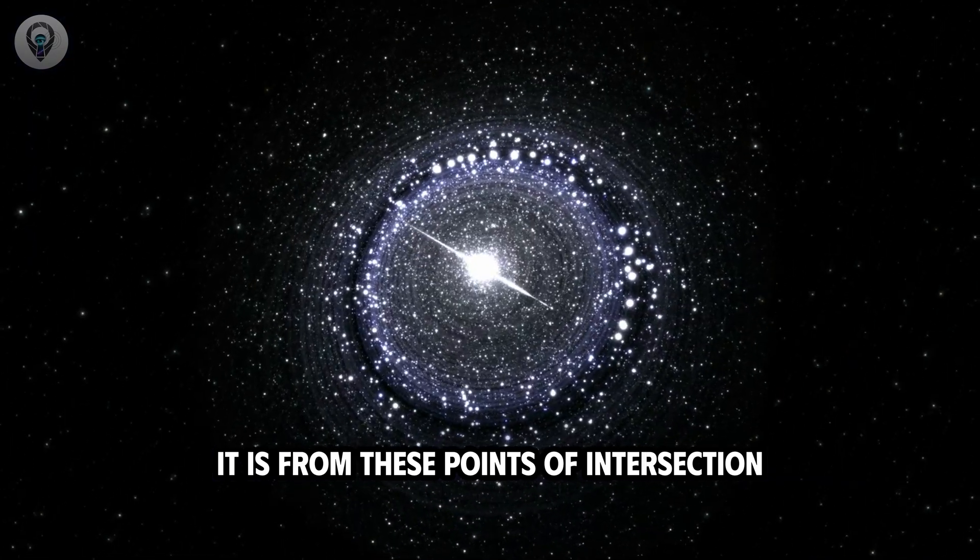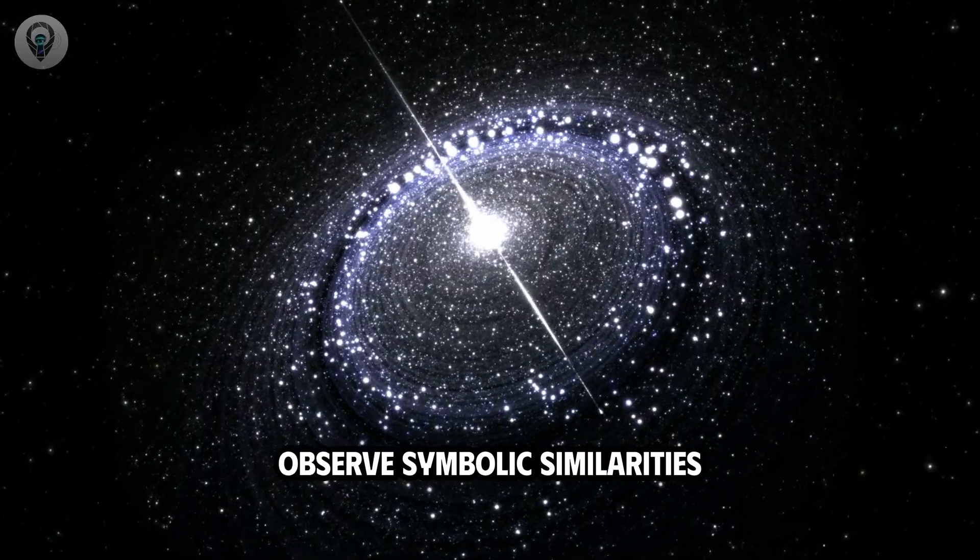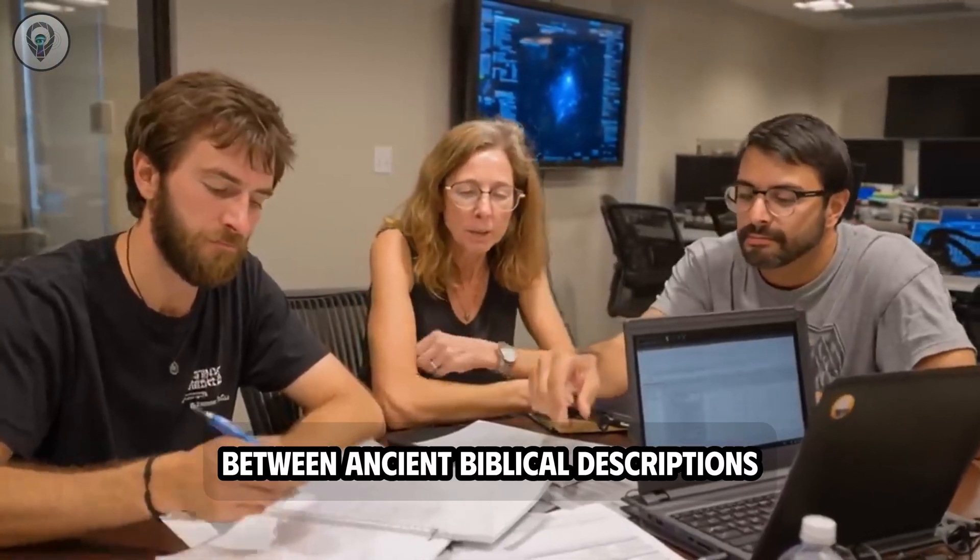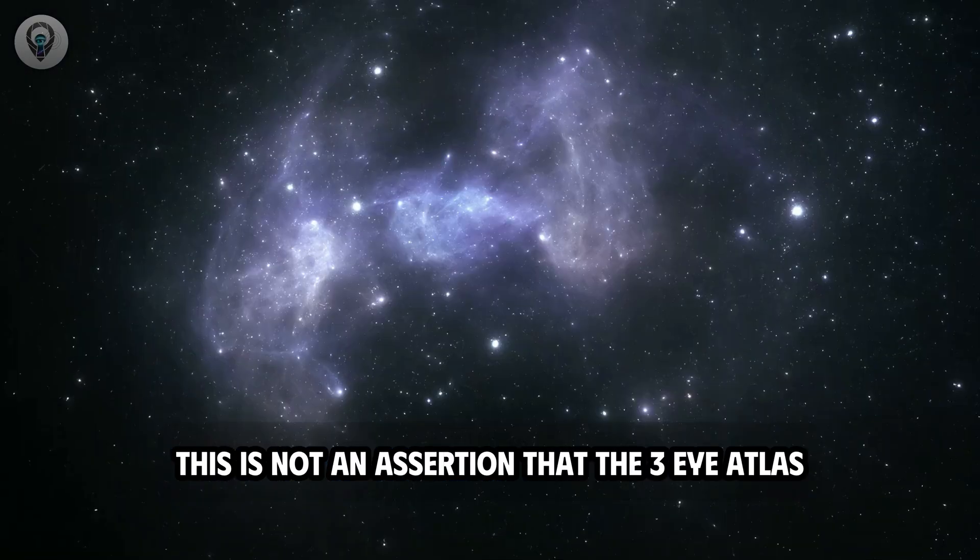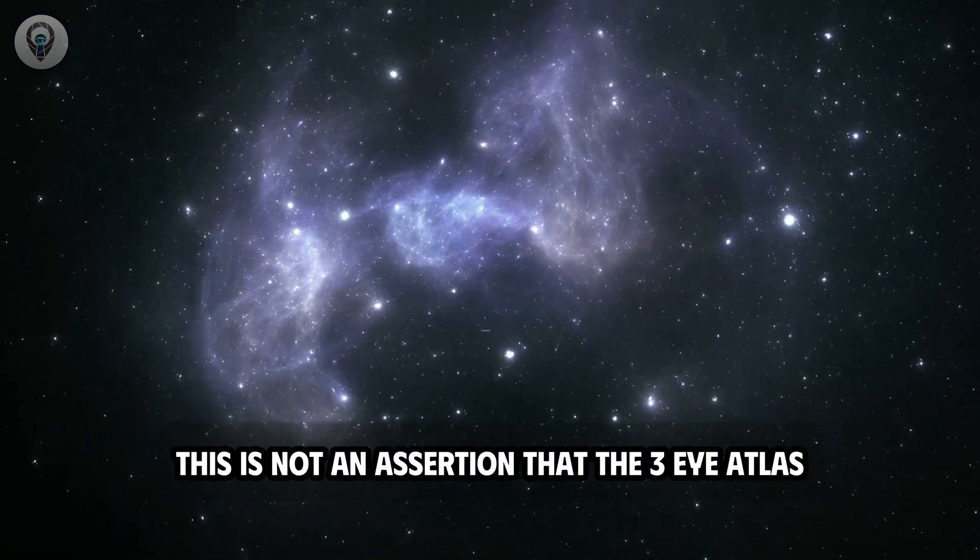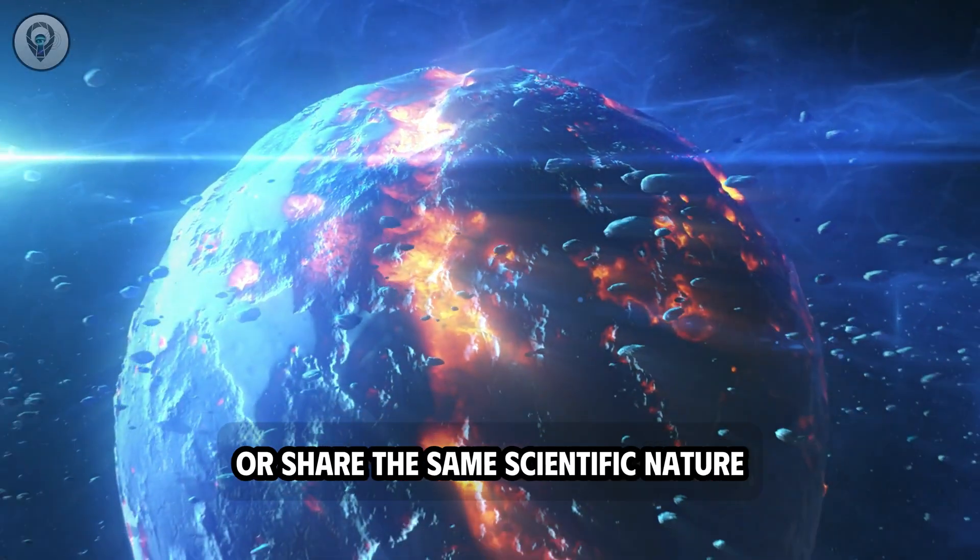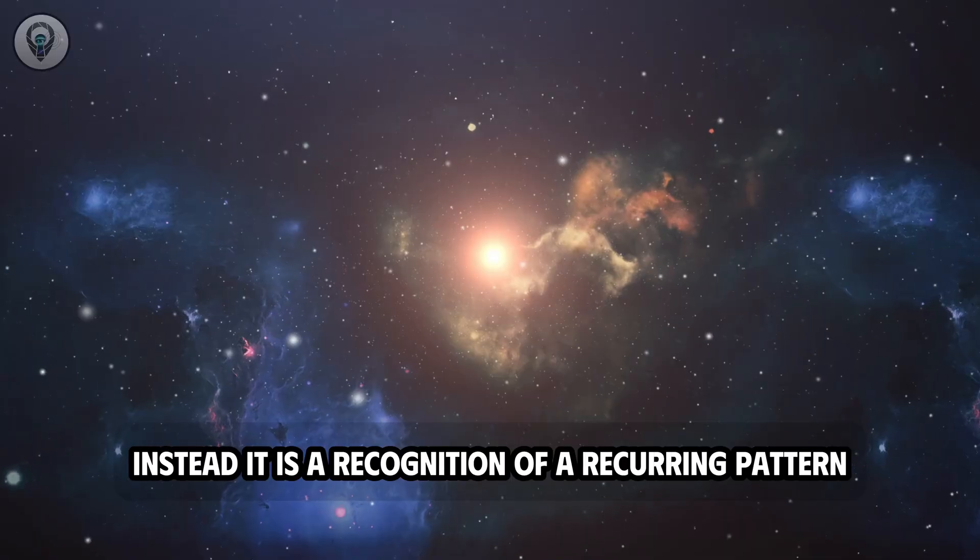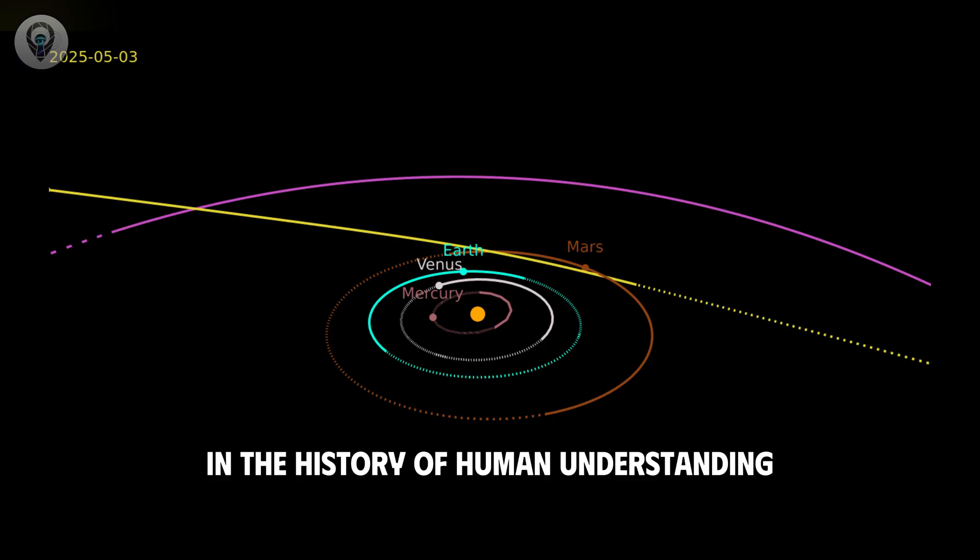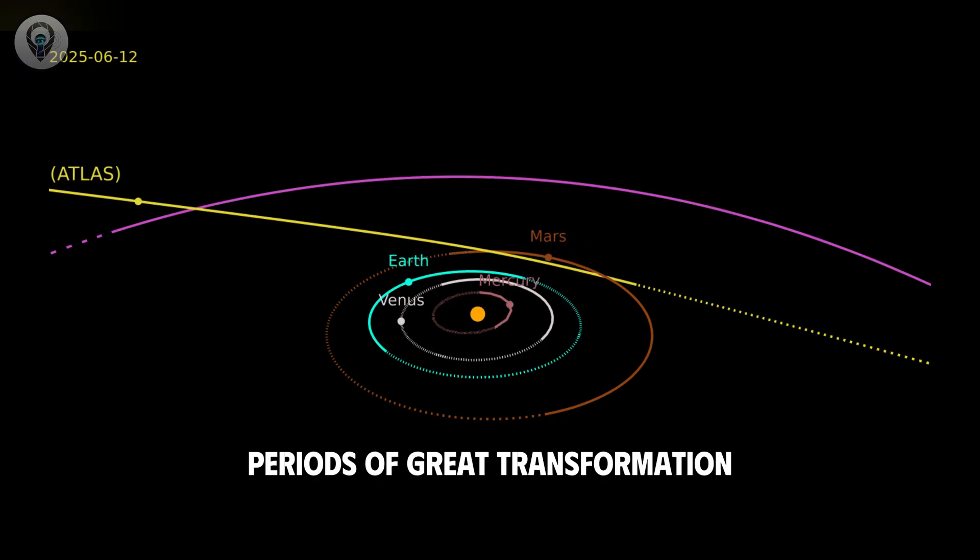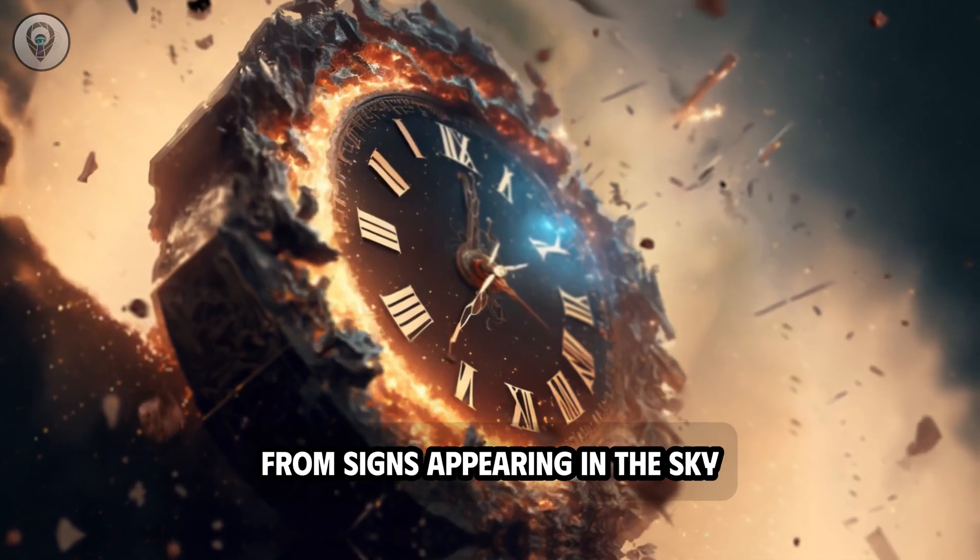It is from these points of intersection that theologians and historians observe symbolic similarities between ancient biblical descriptions and rare astronomical phenomena recorded in modern times. This is not an assertion that the 3i Atlas and the star of Bethlehem are the same phenomenon or share the same scientific nature. Instead, it is a recognition of a recurring pattern in the history of human understanding. Whenever humanity enters periods of great transformation, they seek to decipher meaning from signs appearing in the sky.